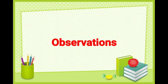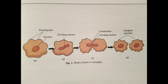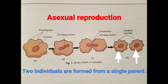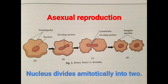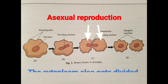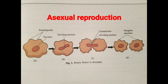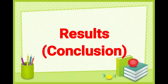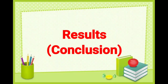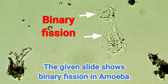Observations: Two individuals are formed from a single parent. The nucleus divides mitotically into two. The cytoplasm also gets divided. Result or conclusion: The given slide shows binary fission in amoeba.